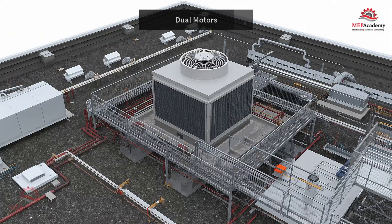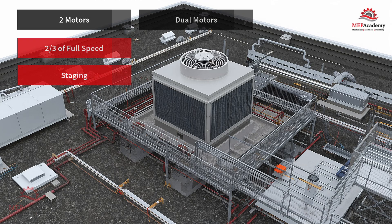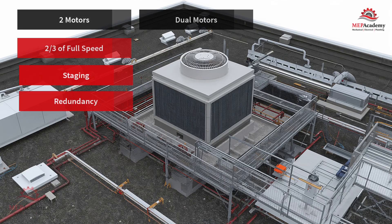Some towers are built with two motors per fan. One motor is sized to run at one-third of the main horsepower, or two-thirds of full speed. This allows the smaller motor to run most of the year, while the larger motor runs during peak loads. They can be staged on one at a time for finer capacity control. This adds redundancy – if one fails, the other can still run – but it also means more equipment and maintenance. This option is not available on all towers.